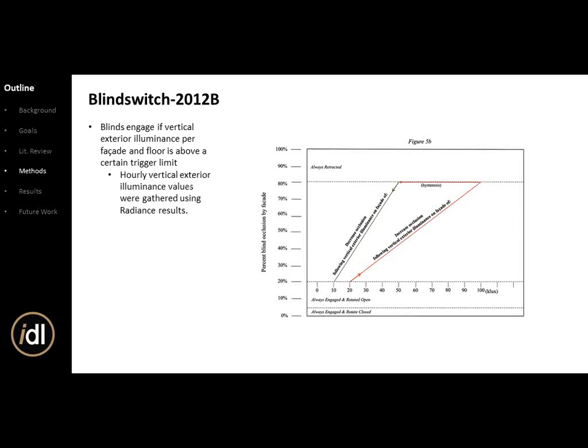Blind Switch B engages based on vertical exterior illumination per facade and floor rising above a certain trigger. It's based on hourly vertical exterior illumination values gathered using Radiance results — analysis points were placed two and a half feet above the floor, one foot outside each window, at the middle of the facade per floor: three per facade, five facades total, giving 15 sensors. The same fixed percentages apply: 5% always engaged rotated closed, 15% rotated open, 20% always retracted.